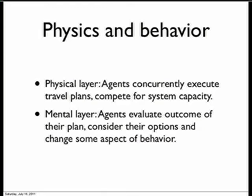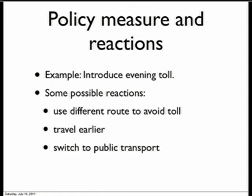Our simulation consists of two layers: the physical layer and the mental layer. On the physical layer, participants of the traffic system concurrently execute their travel plans, competing for system capacity — meaning being caught in congestion behind each other. The mental layer means that people evaluate the outcome of their daily plan: do I arrive in time at my workplace? Do I miss buses? They consider options like switching transport mode or going to work later to avoid congestion, then change some aspect of their behavior. We iterate that and see if a steady state arises.